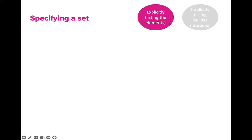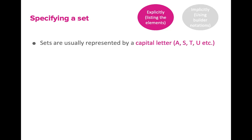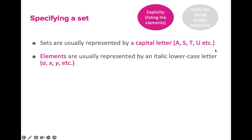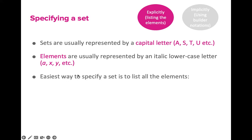Let us discuss the explicit definition, which means simply listing down the elements of a set. Sets are usually represented by a capital letter like A, S, T, U, etc. The elements of a set are usually represented by italic lowercase letters like a, x, y. The easiest way to specify a set is to list all the elements. Suppose set A contains positive integers greater than or equal to 1 and less than or equal to 5 — that will contain elements 1, 2, 3, 4, and 5. This is an explicit definition.